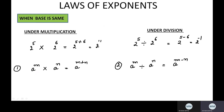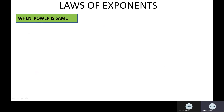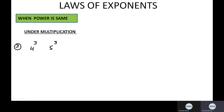Now let's see when the base is not the same but the powers are same. Here the base was same and powers were different. Now suppose the power is same: 4 raised to the power 3 and 5 raised to the power 3. The bases are not same but the powers are same. Under multiplication, how can we solve? Write the bases, multiply them, and write down the power 3. This forms the third rule.